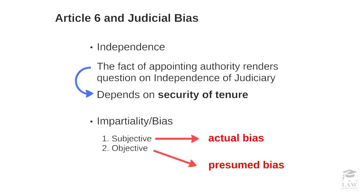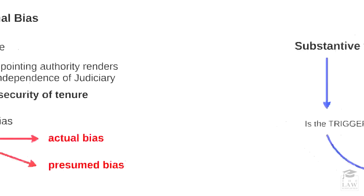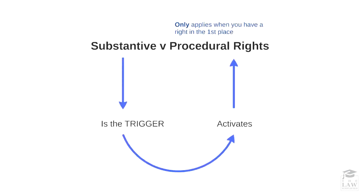Let's have a brief look at how substantive law and procedural rights connect with each other. Firstly, a breach must occur in terms of a substantive law. When there has been a breach of this nature, it acts as a trigger which in turn activates whatever procedural rights a person has — for instance, Article 6, the right to a fair trial.